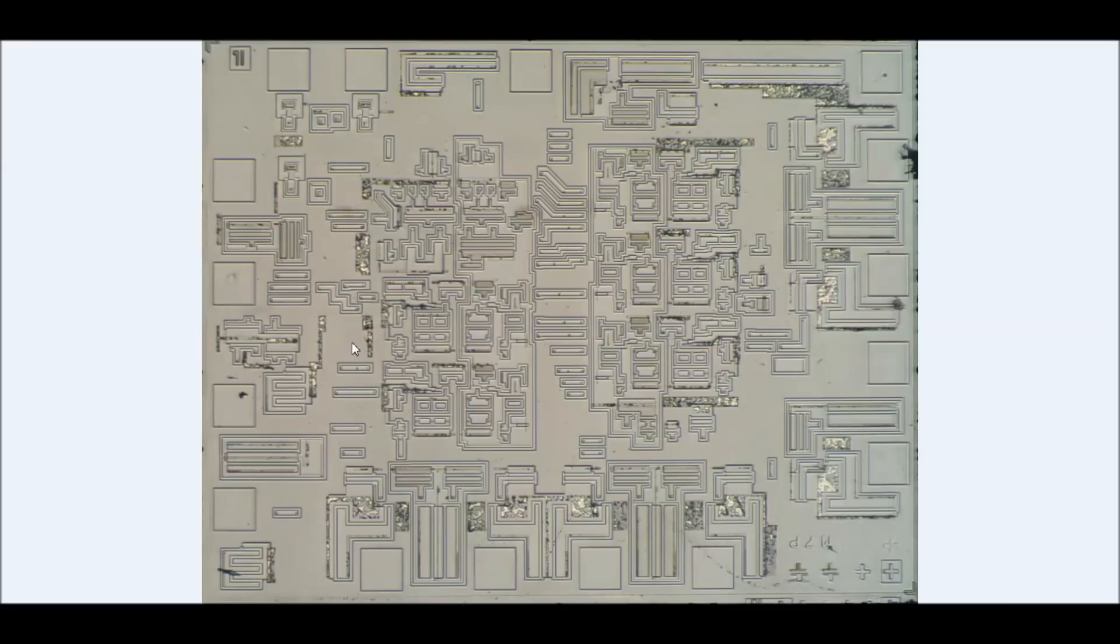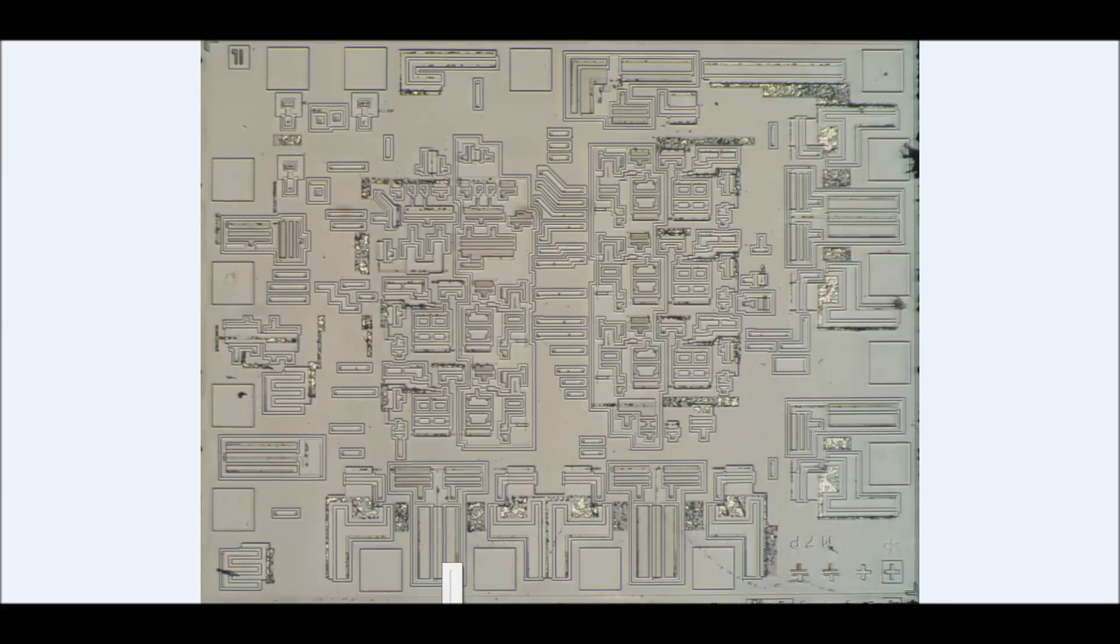To do that, we're going to go to what's known as the diffusion layer. So what's happened is I've taken the metal off the chip, I stripped it off with acid, and now we're looking at basically the silicon. Let's just zoom into some of these rectangles, so we can understand better what we're looking at.